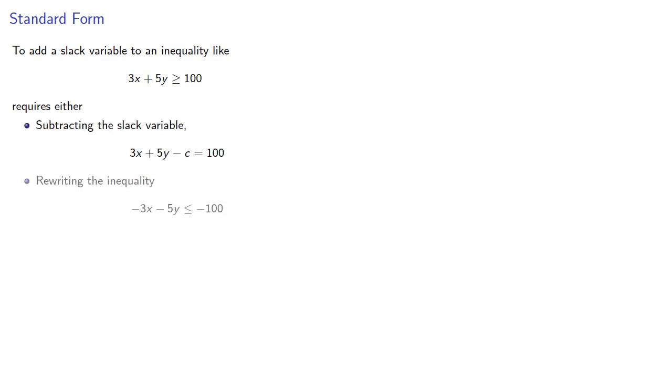To add a slack variable to an inequality like 3x plus 5y is greater than or equal to 100, because the left-hand side is greater, we either need to subtract the slack variable or rewrite the inequality so it's less than or equal to, so we can then add the slack variable. We usually do the latter and say the inequality is in standard form.